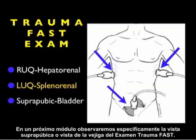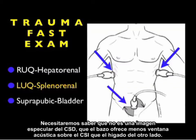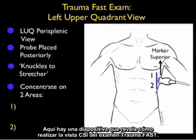In an upcoming module we'll look specifically at the suprapubic view or bladder view of the trauma fast exam. There's a lot of information we can gain by looking at the left upper quadrant in our trauma patients, and we'll need to know that it's not a mirror image of the right upper quadrant — the spleen offers less of an acoustic window onto the left upper quadrant than the liver does on the other side.